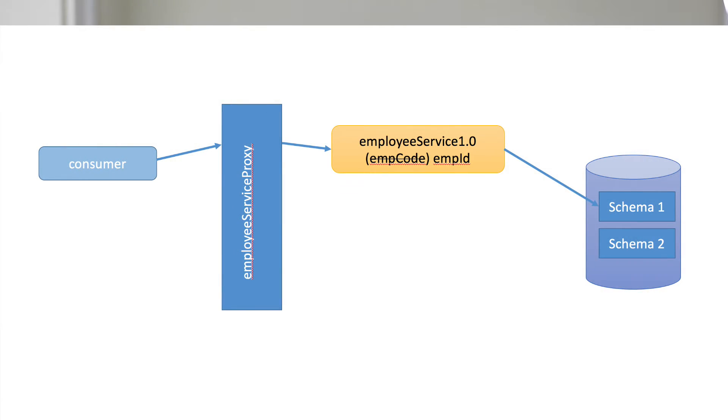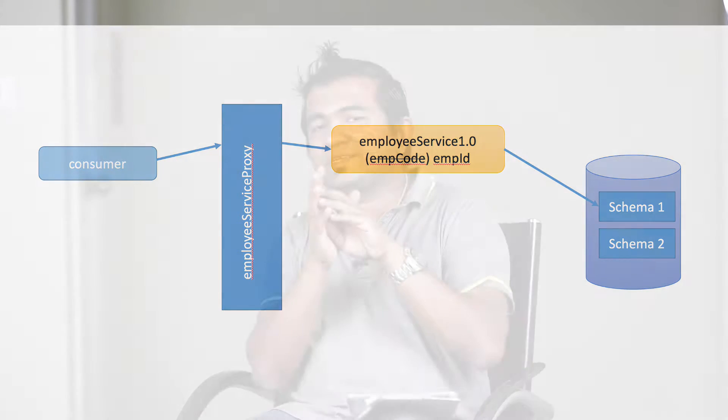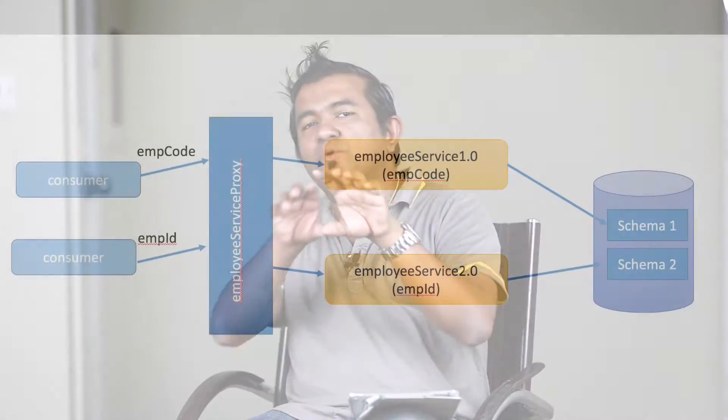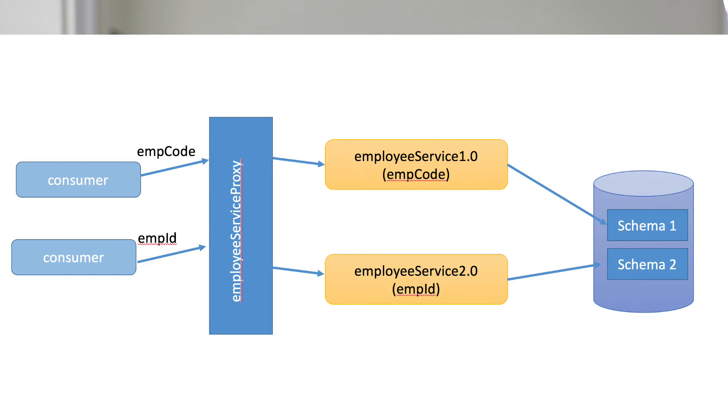Like we discussed in previous videos about aggregator services or the scatter-gather pattern, what you can do is create a separate proxy service. If you have that type of requirement — like frequently updated services — it is better that with the first service itself, you deploy this proxy service. Ask consumers to come through the proxy service. On the consumer side, you don't need to change anything. Now the consumer invokes your proxy service. You modify the proxy service: if the consumer passes an employee ID parameter, go ahead and talk to version two of the employee service. If the consumer passes employee code, go ahead and invoke version one. So in that way, you can independently deploy your service without disturbing your consumers.